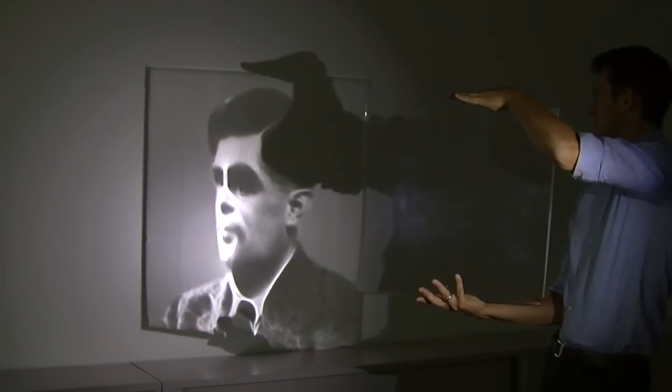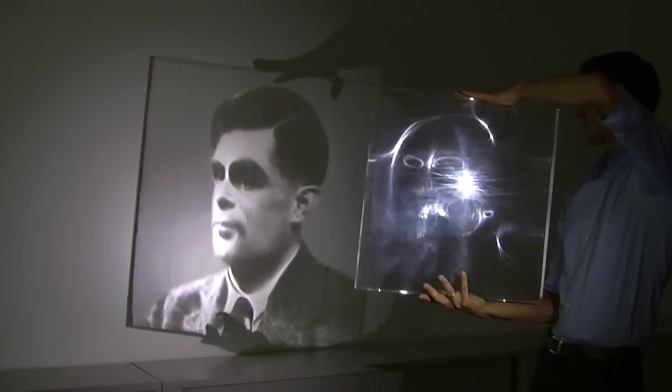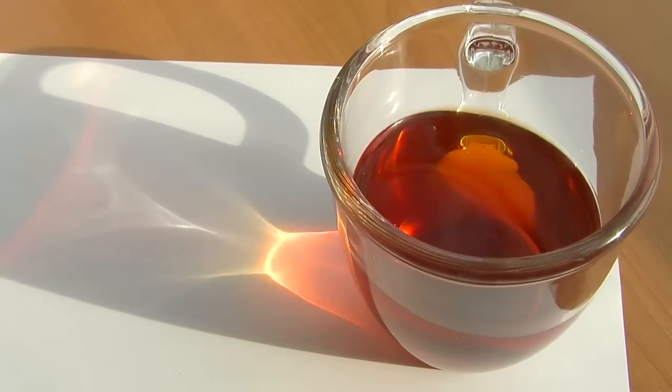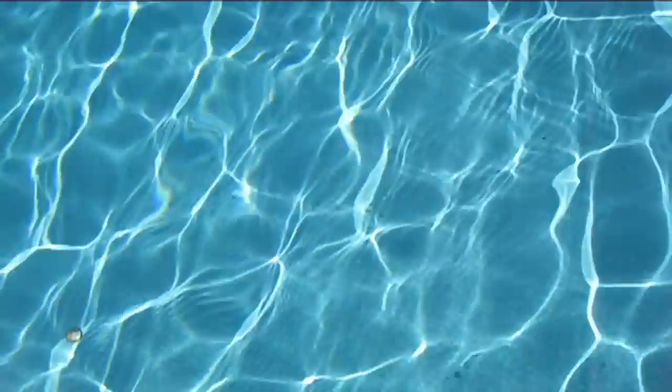This research is about caustics. Caustics are light patterns that are created when light is focused by a reflective or refractive surface, such as a polished piece of metal or some transparent material like glass. Typically these patterns are very random, kind of chaotic, and our goal was to tame these wild and intricate patterns and produce caustics of arbitrary images.